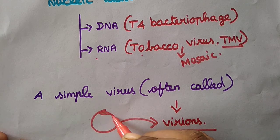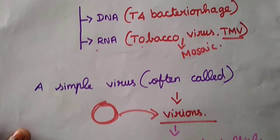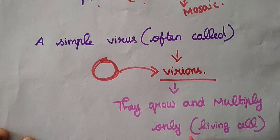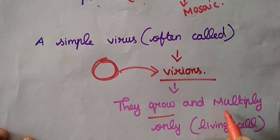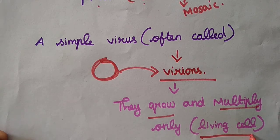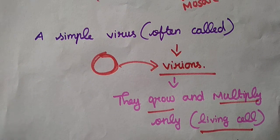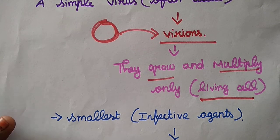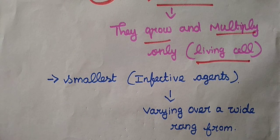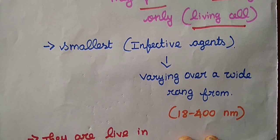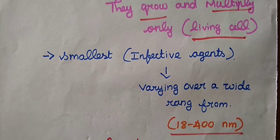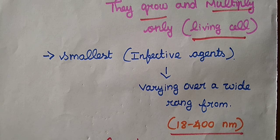Viruses grow and multiply only in living cells — we already said they are parasitic in nature and self-replicating. Viruses are the smallest infective agents, varying over a wide size range of nearly 80 to 400 nanometers. They can live in plants, animals, human beings, and even in bacteria.